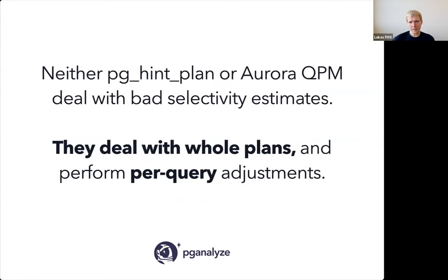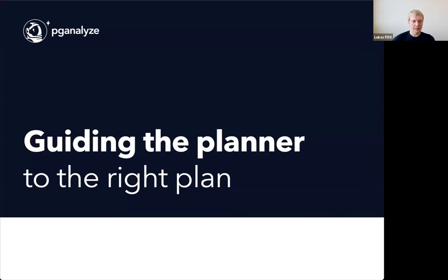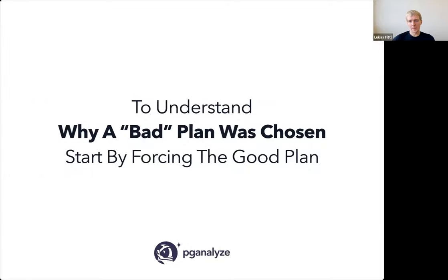Both pg_hint_plan and Aurora QPM are useful, but they always deal with whole plans — per-query adjustments. pg_hint_plan requires manual work; Aurora QPM requires less manual work because it can try to understand your system automatically. But both are coarse mechanisms that don't really fix the root cause of bad plans in Postgres. What we really want to do is guide the planner to the right plan. When I look at a bad plan, I want to understand why the bad plan was chosen, and I start by forcing the good plan.